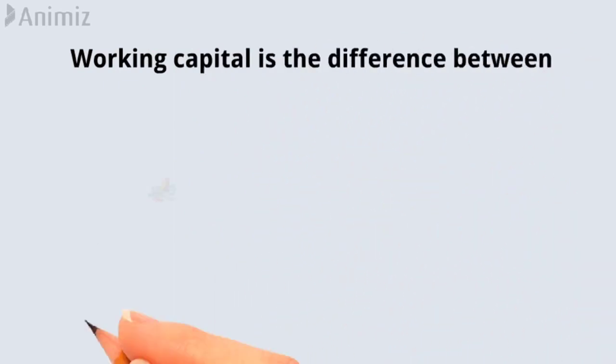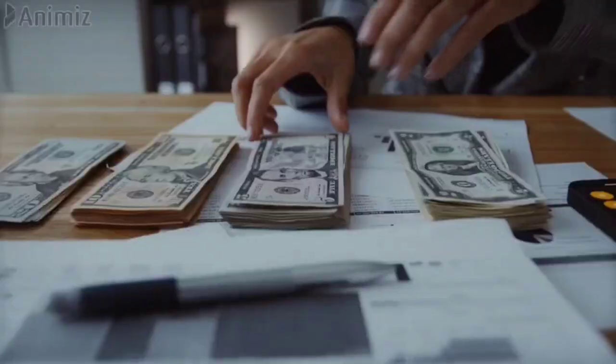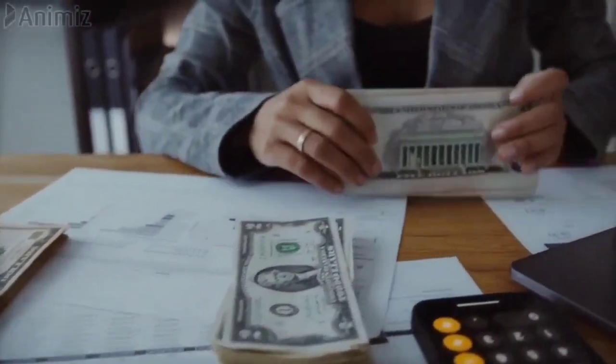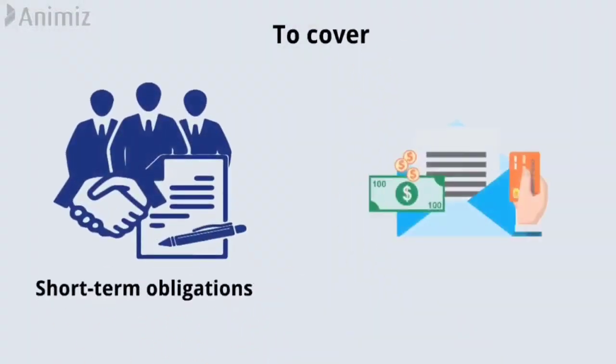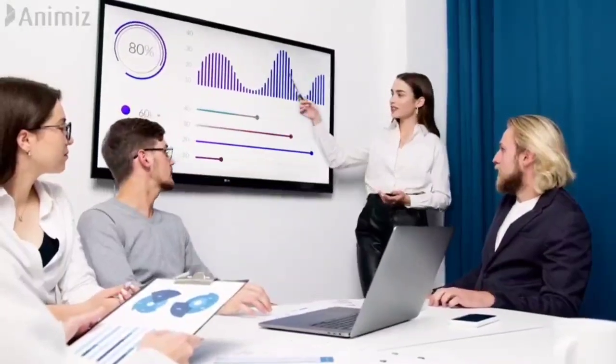Working capital is the difference between a company's current assets and its current liabilities. In other words, it represents the amount of money a company has available to cover its short-term obligations and expenses.